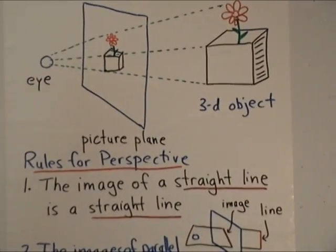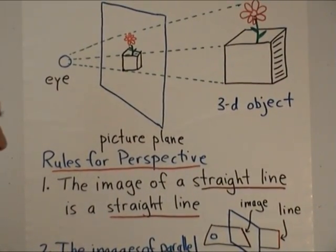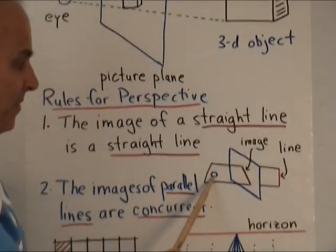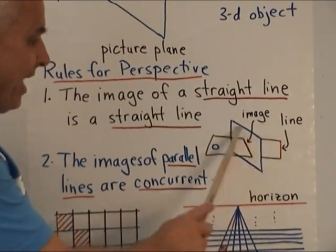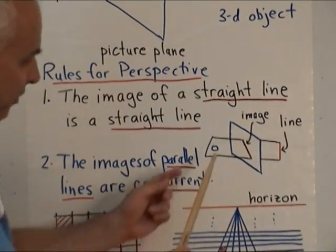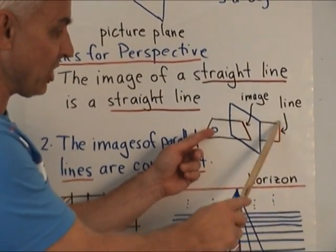The first one is that the image of a straight line is always a straight line. So for example, if there's our eye and there's the line that we're trying to represent and here is our picture plane and if we imagine a plane that goes through our eye and the image line...